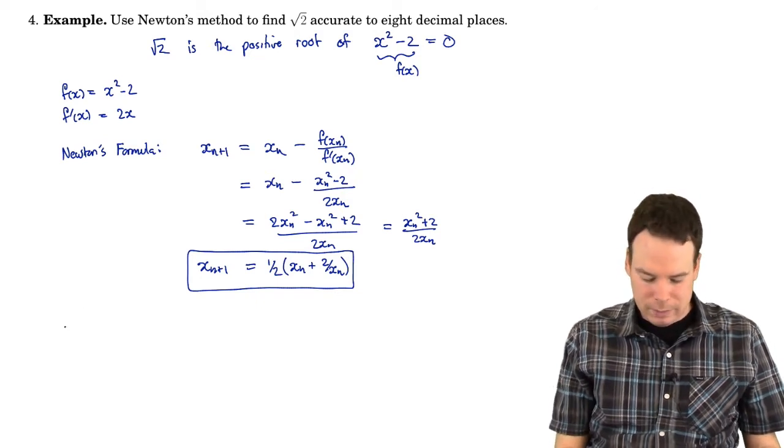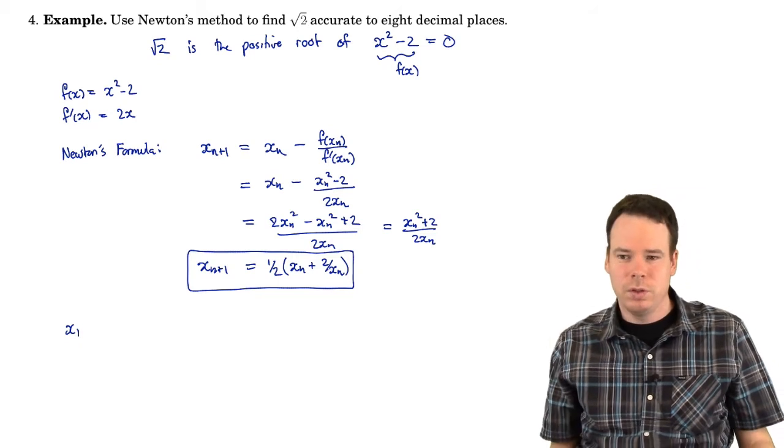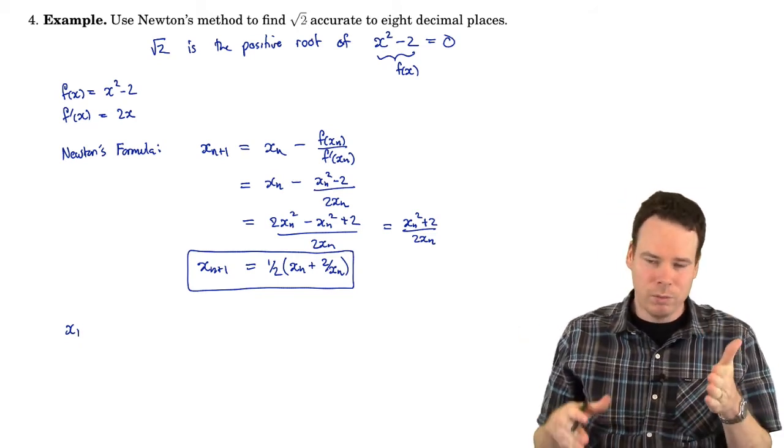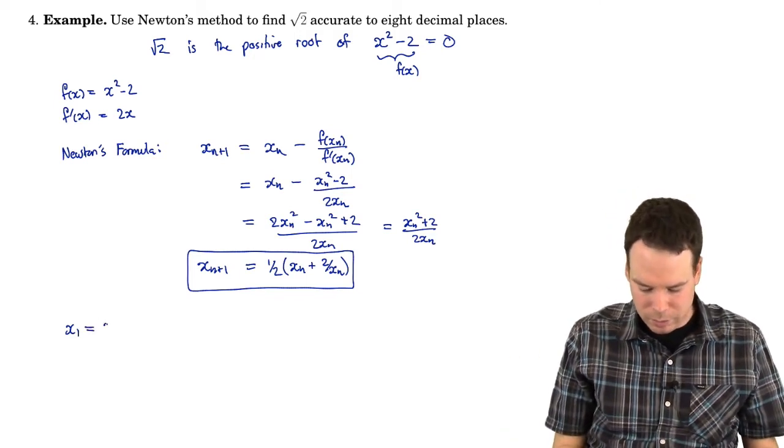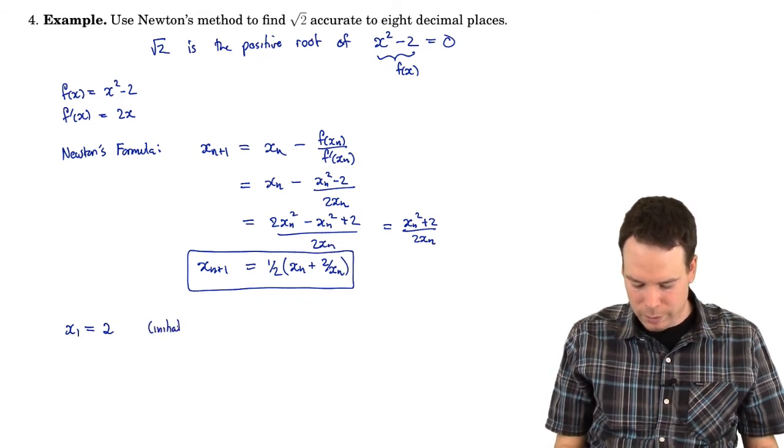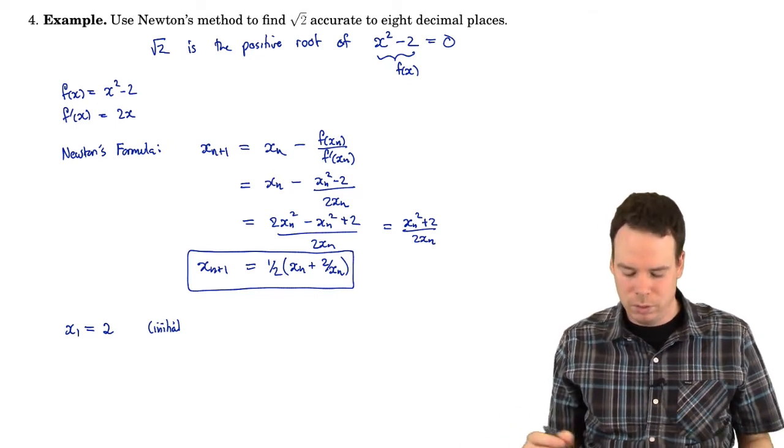So now I need to know an initial guess. What should my initial guess be? Well, the square root of 2, 2 is between 1 and 4. So the square root of 2 would be between the square root of 1 and the square root of 4. So it would be between 1 and 2. So maybe I'll take my initial guess to be 2. You could take it to be 1, or you could even take it to be 1 and a half, since you know the square root of 2 is going to be between 1 and 2.